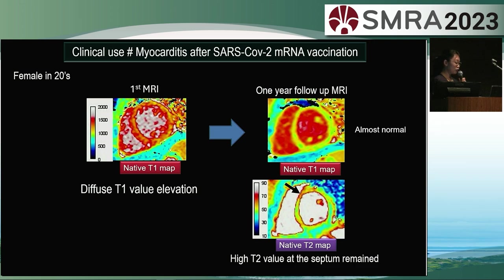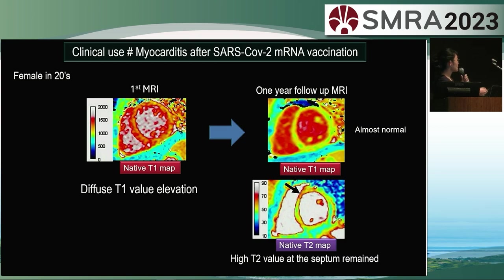However, one year later, it is evident that the T2 signal normalized. During follow-up, T2 maps were also acquired and the abnormal high-value region in orange remains present in the septum.